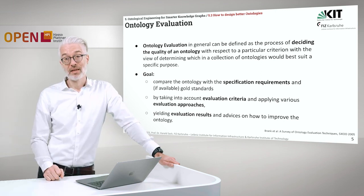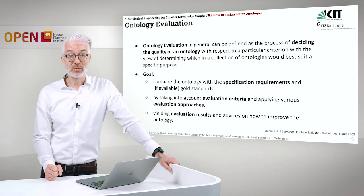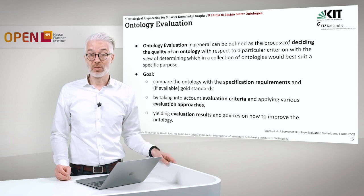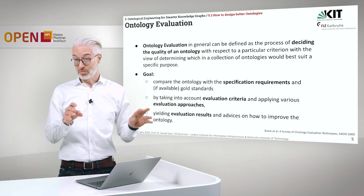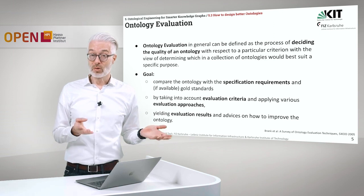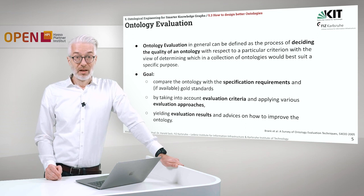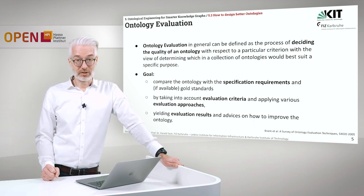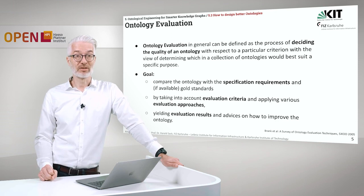We always have the purpose and how we are going to use the ontology in mind. The goal of evaluation is to compare the ontology, if possible, with specification requirements — things like so-called competency questions, which are already specification requirements meant to be answerable with the help of the ontology. Or if available, gold standards would be even better. Taking into account evaluation criteria and applying various evaluation approaches will yield evaluation results and advice on how to improve the ontology.